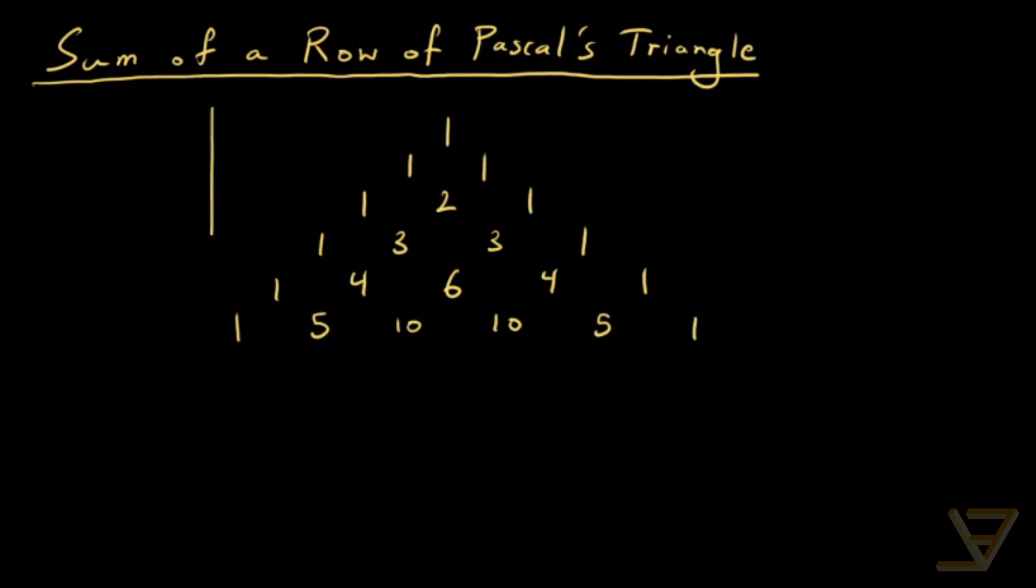So what we want to do is first of all label the rows so that we have numbered them properly. So you have row 0, row 1, row 2, row 3, row 4, row 5, and so on. So we have until we have row n.